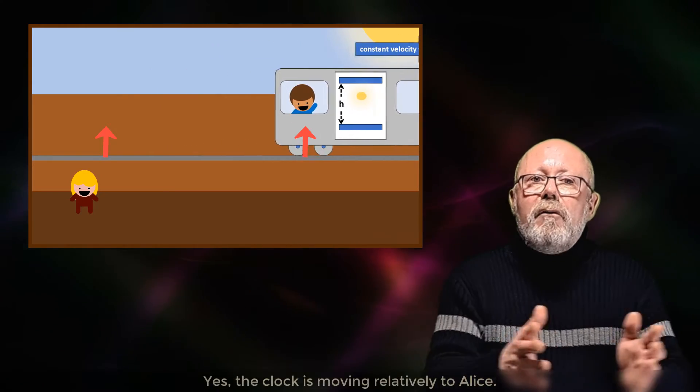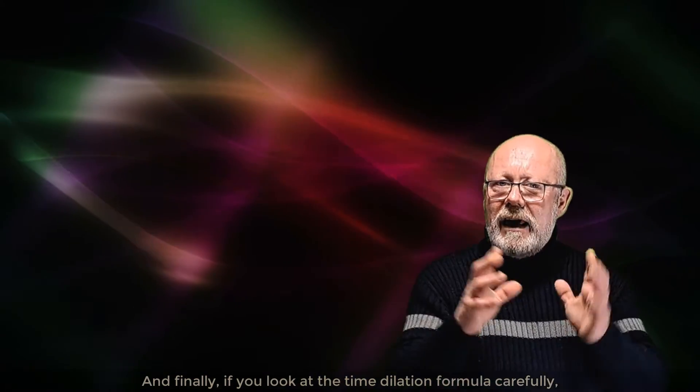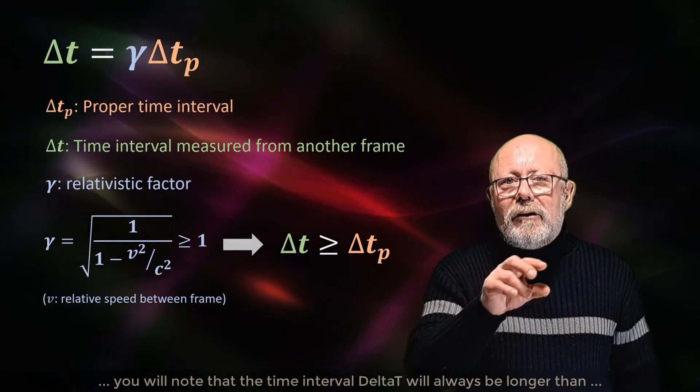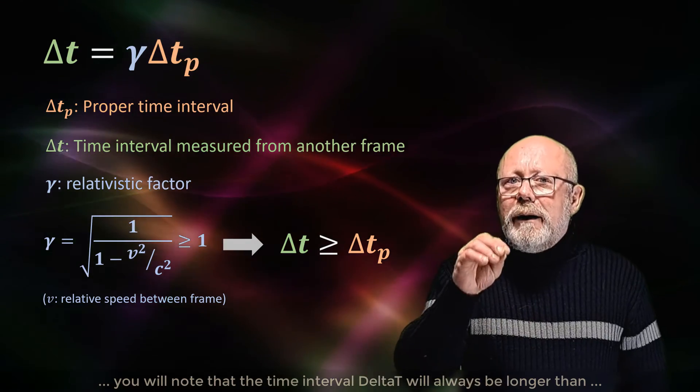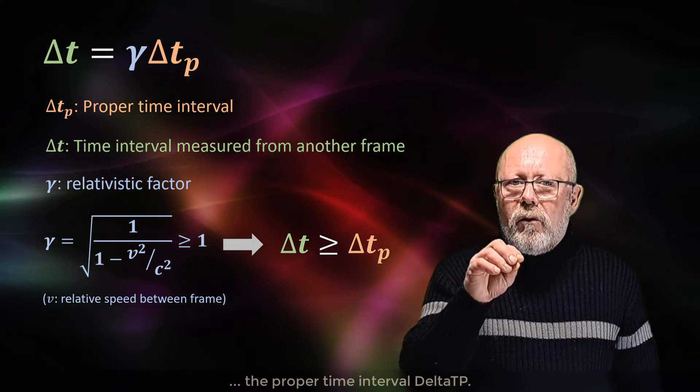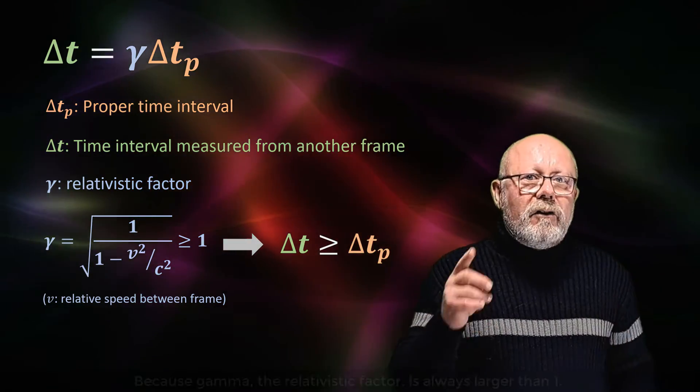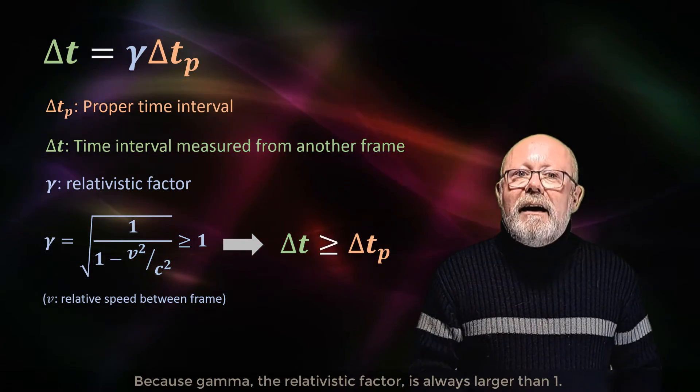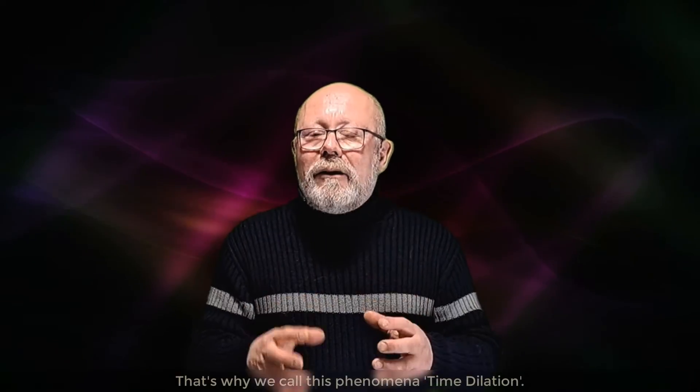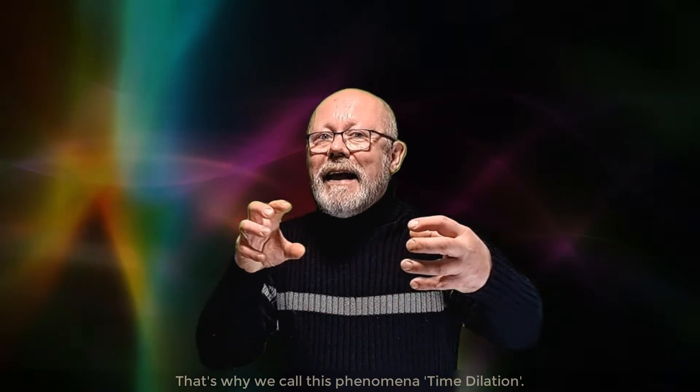the end and the beginning of a tick happen at different positions within her frame of reference. Yes, the clock is moving relatively to Alice. And finally, if you look at the time dilation formula carefully, you will note that the time interval delta t will always be longer than the proper time interval delta t_p, because gamma, the relativistic factor, is always larger than one. That's why we call this phenomenon time dilation.